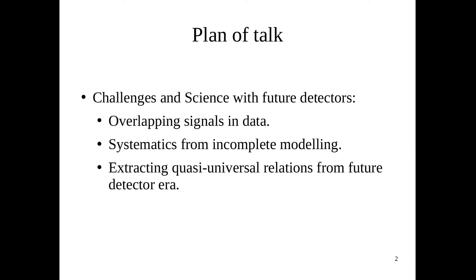Although we'd all be excited to see the science we can extract from future gravitational wave era, it'll be unfair to talk about what science we can extract unless we also take into account the challenges we have to face from future generation data. In particular, I'll be covering two aspects today: one is overlapping signals in data, which is when many signals enter the detector's band at the same time, and the second is systematics from incomplete modeling. Finally, I'll be talking about techniques to possibly extract a quasi-universal relation from future gravitational wave era.